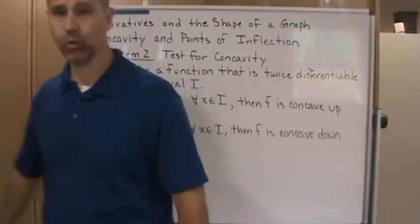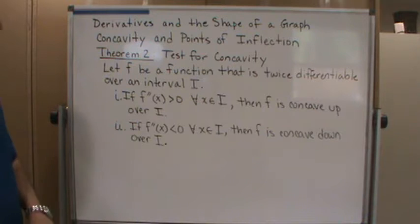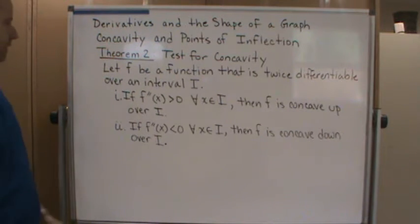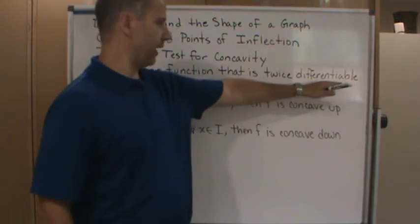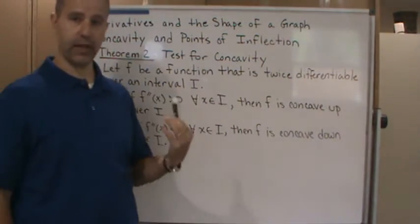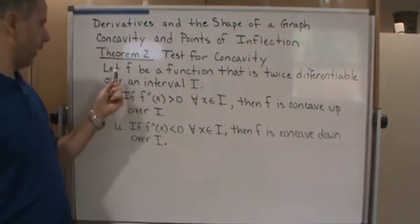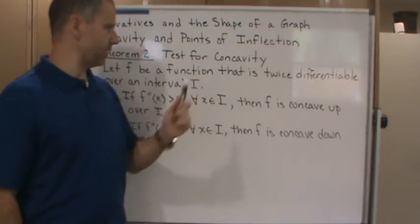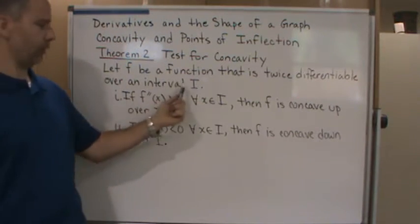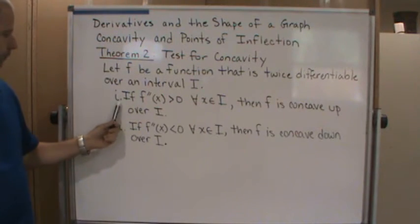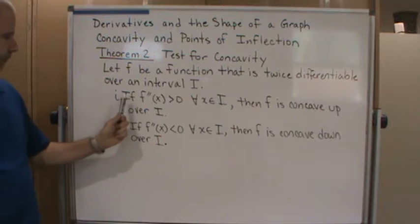Okay, welcome to Theorem 2, and this is the test for concavity. Theorem 2 states: Let f be a function that is twice differentiable, so that just means that you can differentiate the function twice so you can get the second derivative. Let f be a function that is twice differentiable over an interval I.